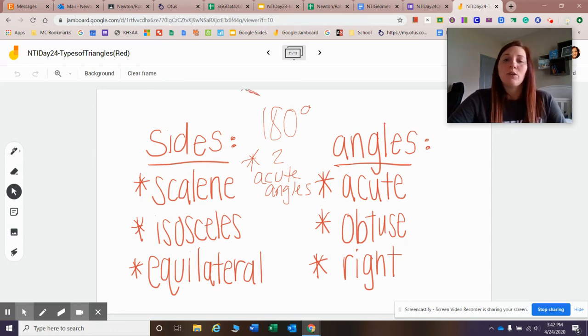All right. So what I want you to do today is I want you to give a green light on reflex. Then you're going to watch this video and then be looking for the activity that is in Google Classroom.